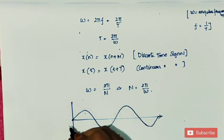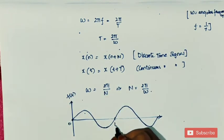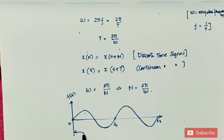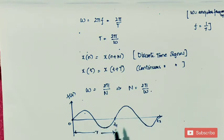Let us consider an example. If we consider this wave, the total time from t1 to t2 is the time period T. The curve is repeating at a regular instant of time with period T and it follows a definite pattern, so it is called a periodic signal.